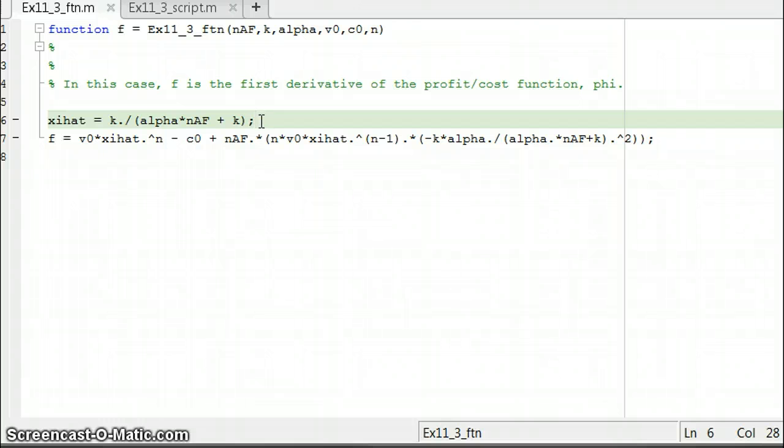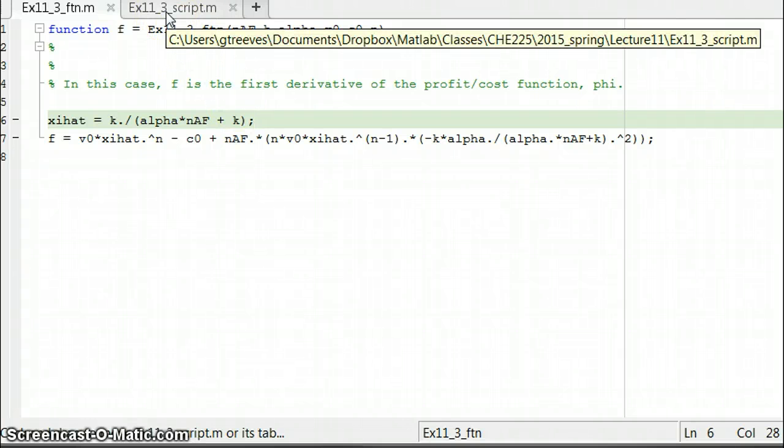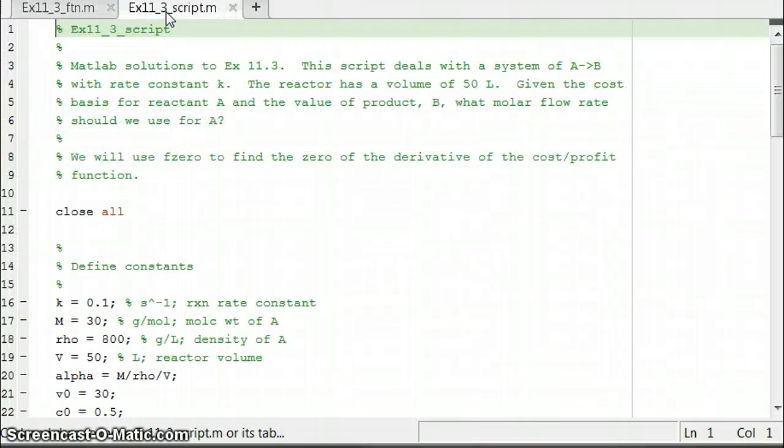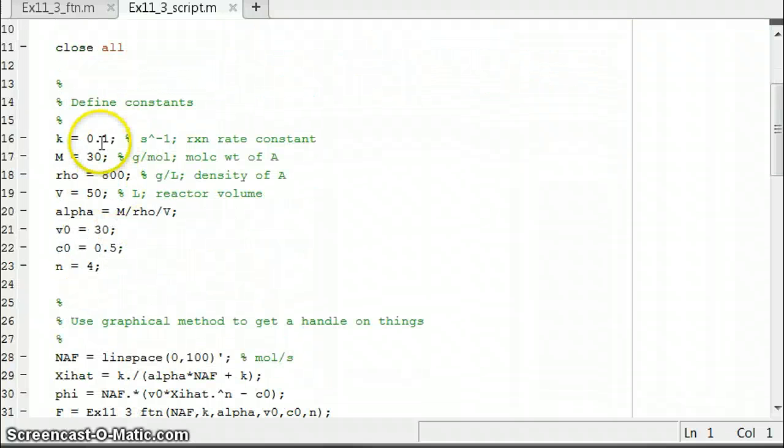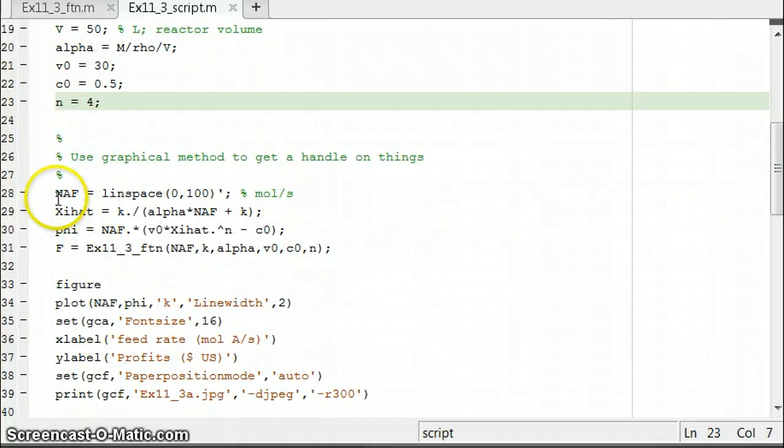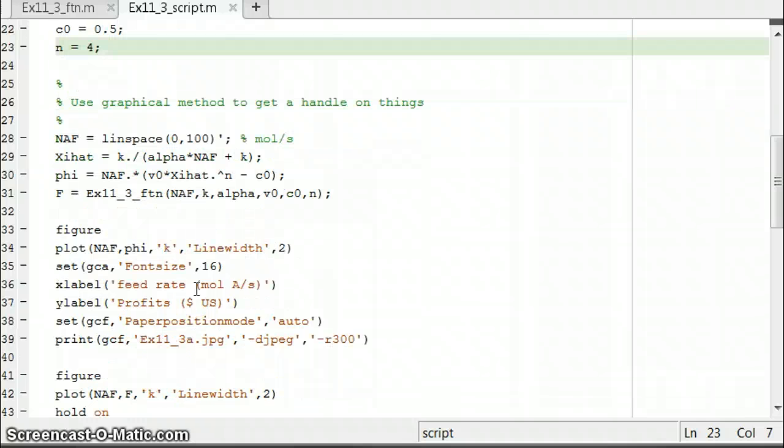And it's a nice physical intuition. And in addition to that, so there's your function, and then here's what our script looks like. Some comments up here, closing all the figures. We have now defined what all of our physical parameters are. The first thing we're going to do is use a graphical method to get a good handle on things.